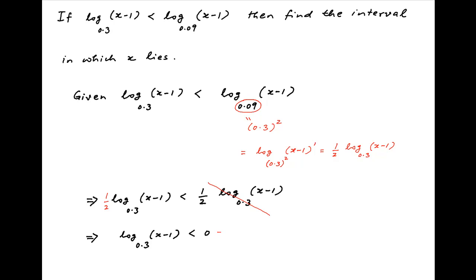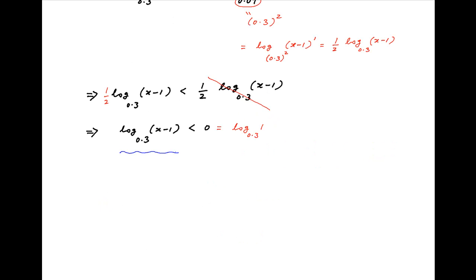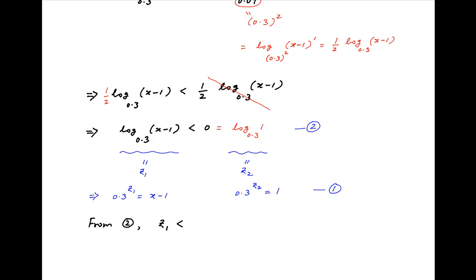The 0 on the right hand side can also be written as log of 1 to the base 0.3. Let's denote the left hand side of this inequality by z1 and the right hand side by z2. The definition of z1 implies that 0.3 raised to the power z1 equals x minus 1, and 0.3 raised to the power z2 equals 1. Let's denote these as equations 1, and denote the inequality above as inequality 2. From inequality 2, z1 is less than z2.